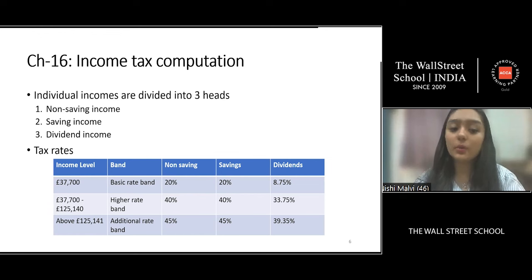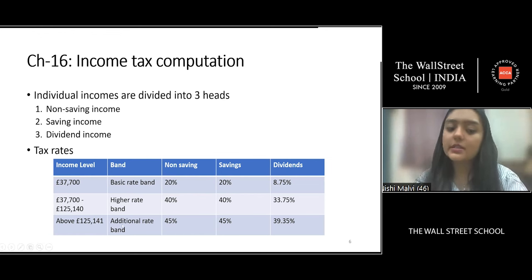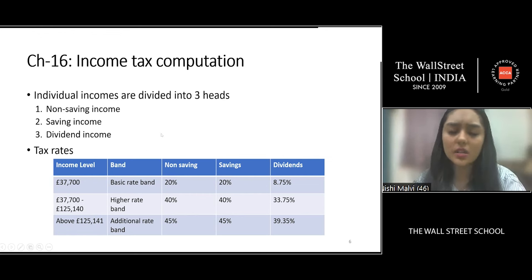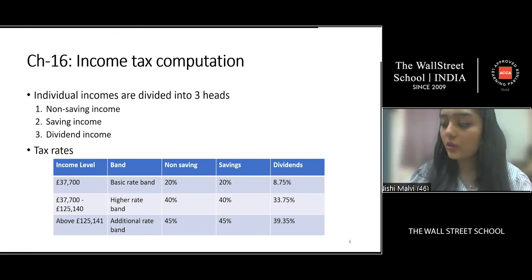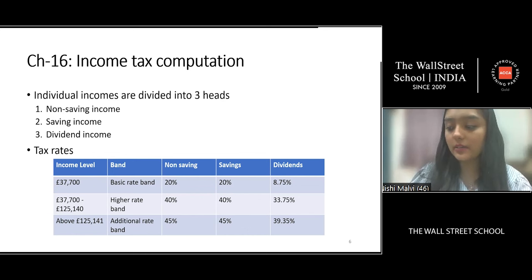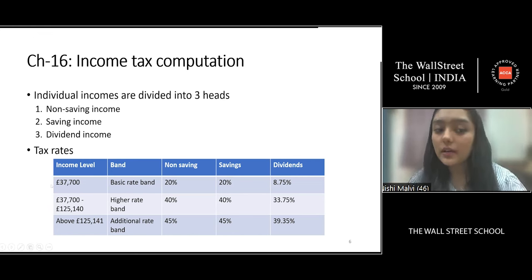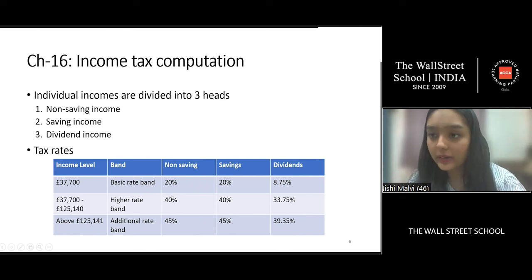Above £125,141 is the additional rate band. For example, if someone has income of £50,000 after adjusting all reliefs: £37,700 is taxed at the basic rate, and the remaining £12,300 is taxed at the higher rate band.